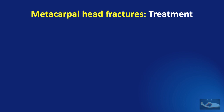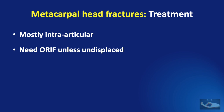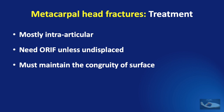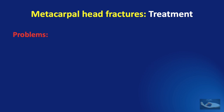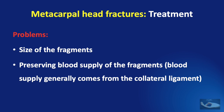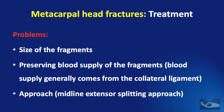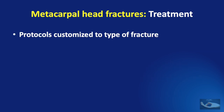The basic points to remember before treating metacarpal head fractures are that they are mostly intra-articular, most need open reduction and internal fixation unless undisplaced, and the aim of treatment is to maintain the congruity of the articular surface. Unique management problems include the size of the fragments, preserving blood supply from the collateral ligament attachments — if disturbed, necrosis is likely — and the midline extensor splitting approach required, which may result in tendon adhesions post-operatively.